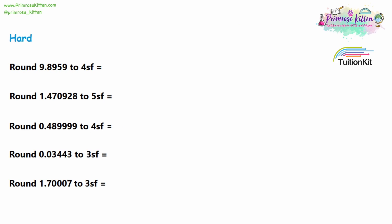Moving on to the hard questions — much longer numbers and more significant figures, but exactly the same method. For four significant figures, I rule off after the fourth digit: the nine, the eight, the nine, and the five. The first number I'm losing is a nine — that is higher than five, so I am going to round up. The answer is not 9.895; it'll be 9.896 instead.